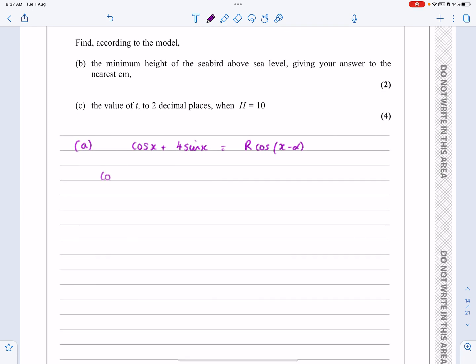So cos x plus 4 sin x, sorry, is equal to, we are just expanding that, cos A minus B. You absolutely need to know these. I don't care whether they're on any formula sheet or anything. Just learn them by rote, all of them in your head. So cos A minus B is cos A cos B plus sin A sin B.